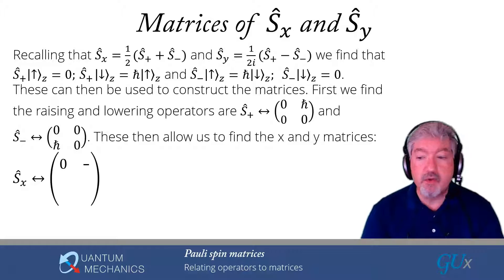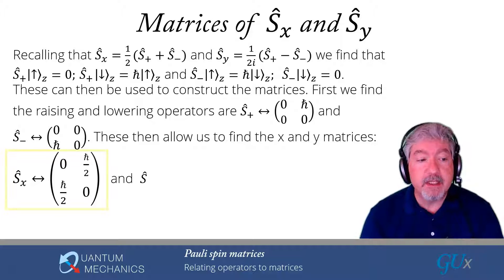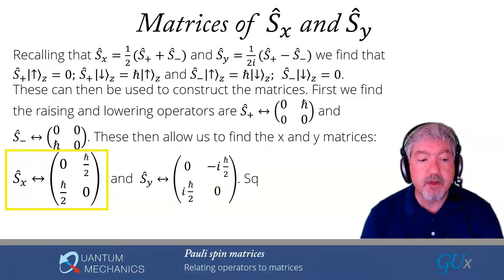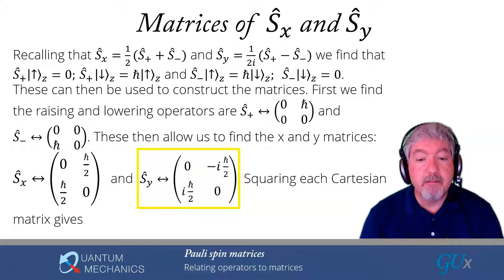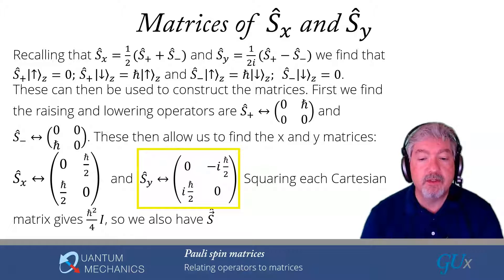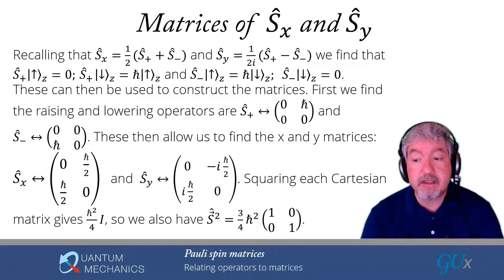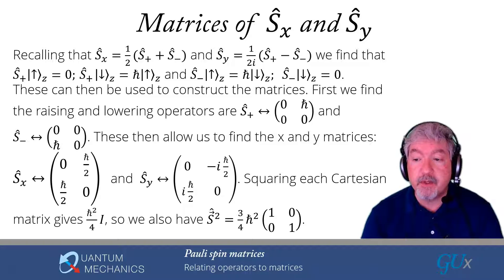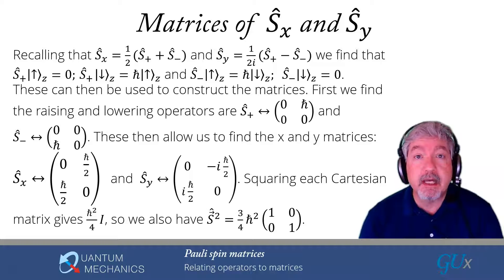Plugging S+ and S− into the definitions for Sx and Sy, we find that Sx = (0, ℏ/2; ℏ/2, 0) and Sy = (0, −iℏ/2; iℏ/2, 0). We're just using the definitions of what the operators do on the states to complete these calculations.